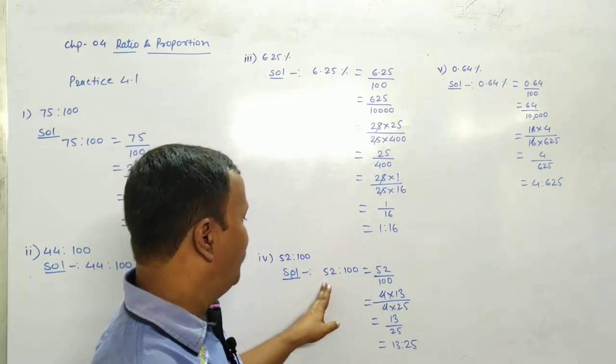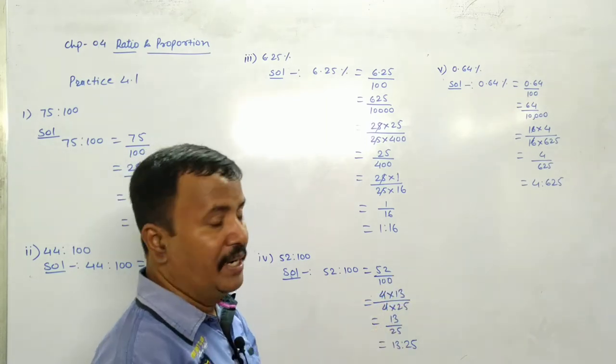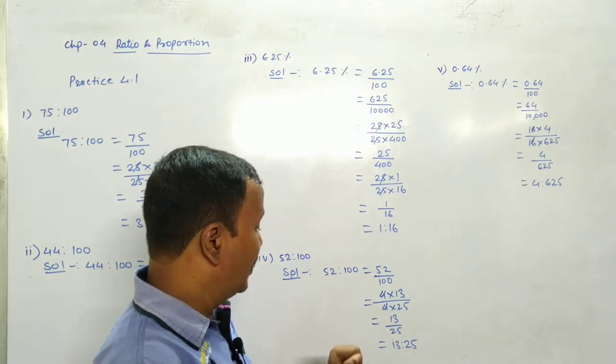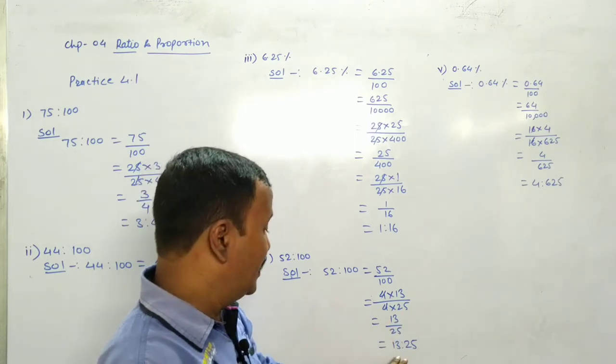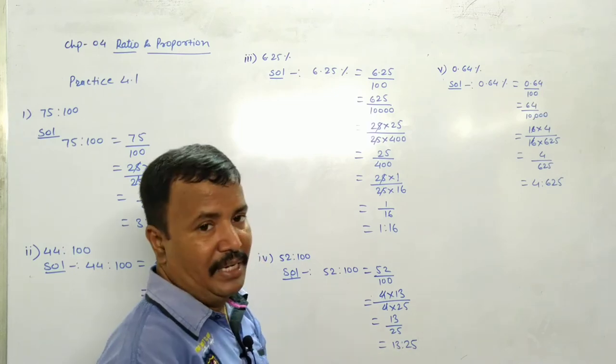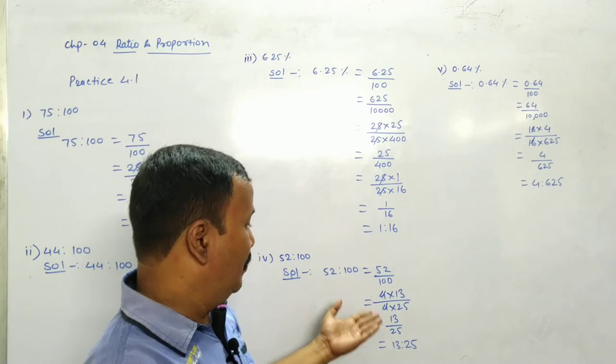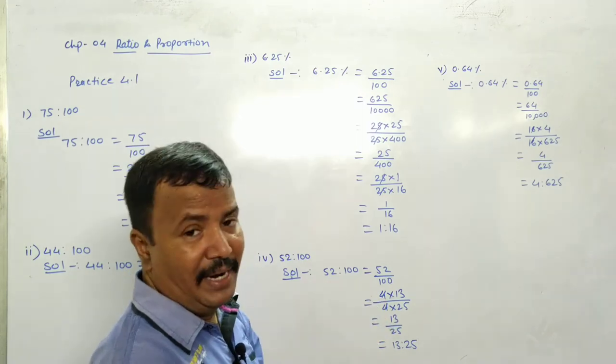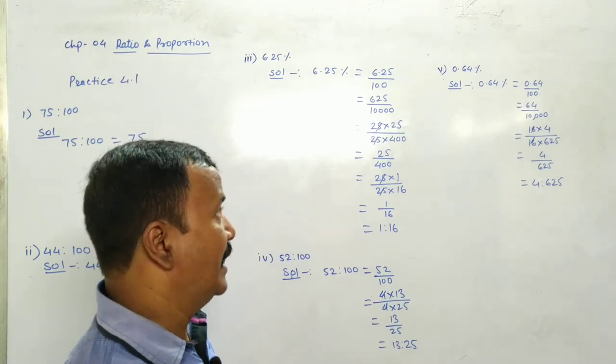Fourth one is 52 ratio 100. 52 divided by 100. 4 into 13, 4 into 25. Again 4 4 cancel. Answer is 13 divided by 25. And ratio is 13 ratio 25. Simple hai. Kya karna hai? Both numbers ko divide karna hai. Cut karna hai. Or bachawa ratio.